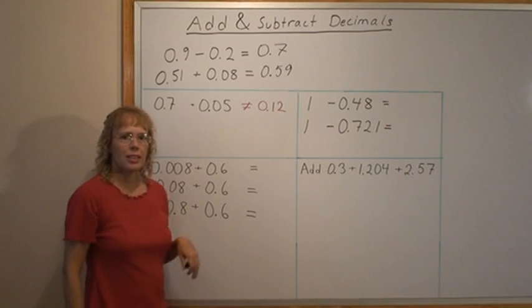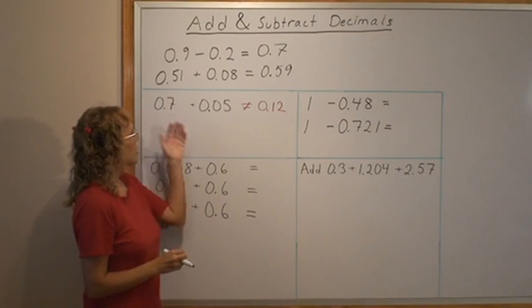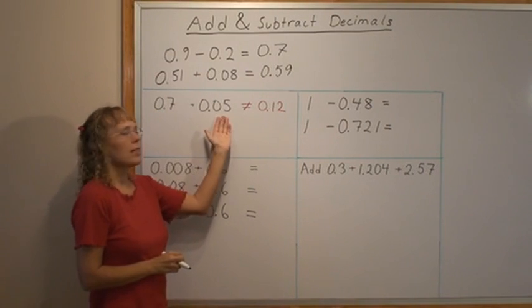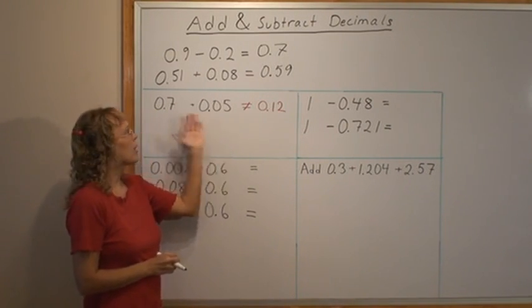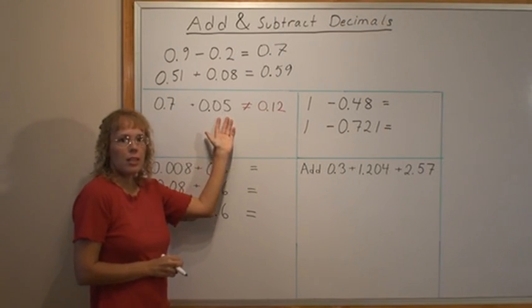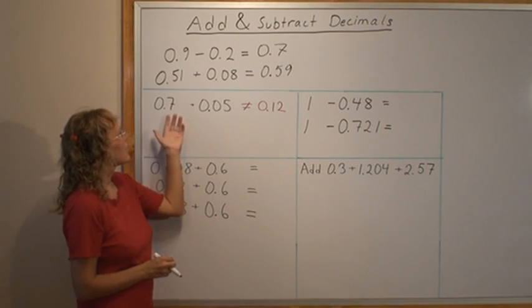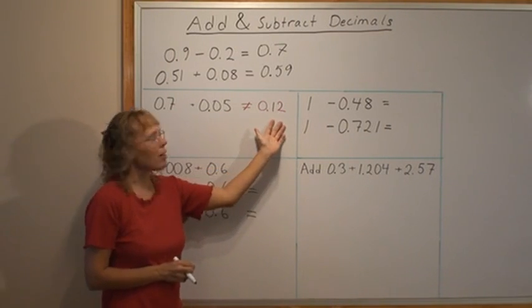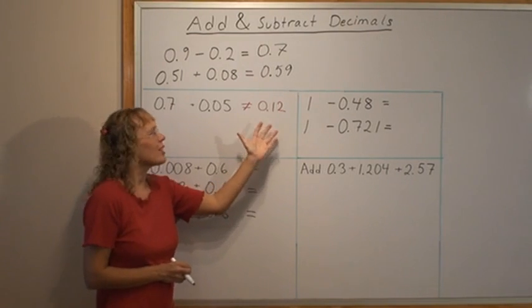Now where many students get in trouble is when we have this kind of problem where we have tenths in one number and then some other kind of part in the other number like tenths and hundredths. The mistake they do sometimes is just add these as they were just plain numbers. 7 plus 5 equals 12. I'm showing here that this is very wrong.